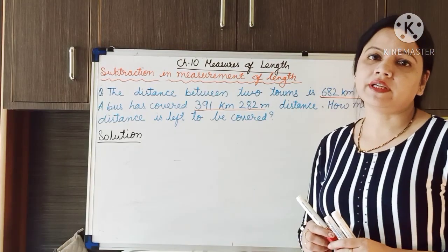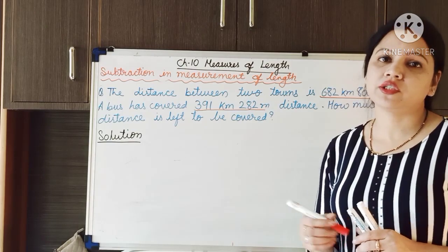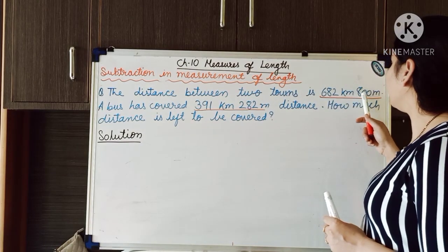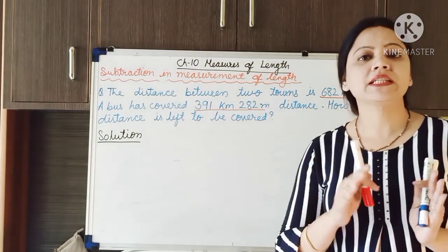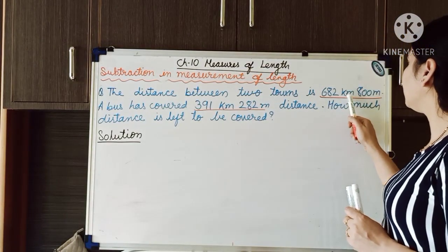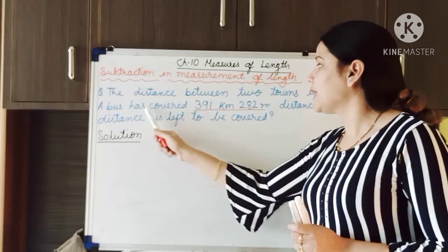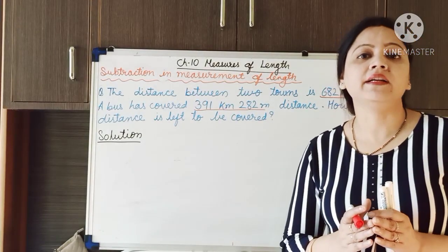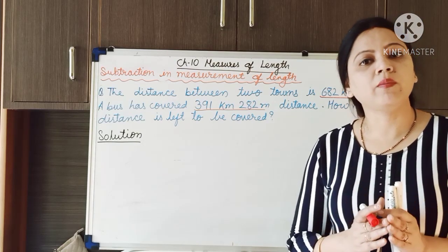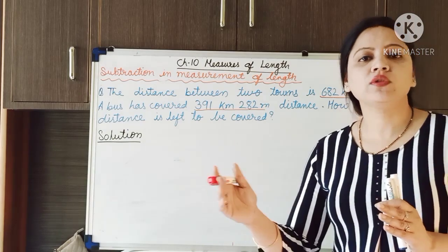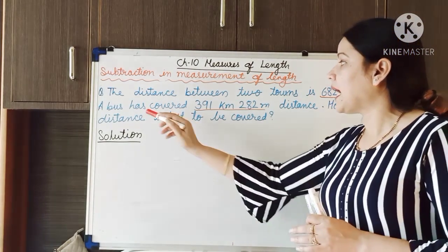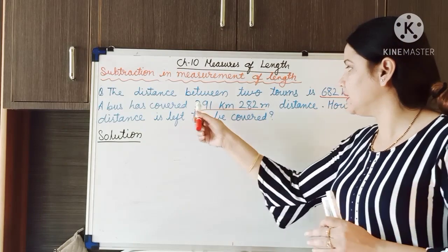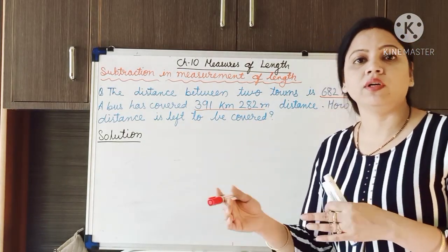Here I have written a statement sum and we will try to find out the solution of this problem. The question is: the distance between two towns is 682 kilometer and 800 meter. Suppose the distance between Delhi and Mumbai is 682 kilometer and 800 meter. A bus has covered 391 kilometer and 282 meter. You are going from Mumbai to Delhi and the bus has already covered 391 kilometer and 282 meter. So how much distance does the bus still have to cover to reach Delhi?